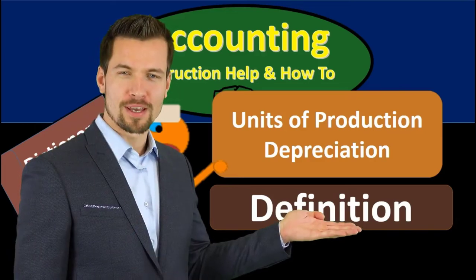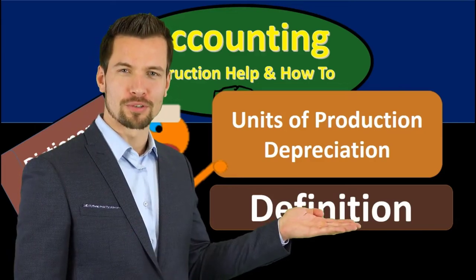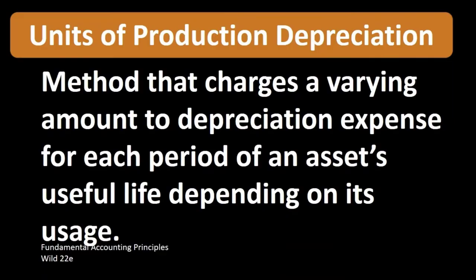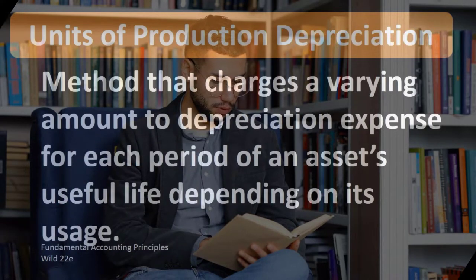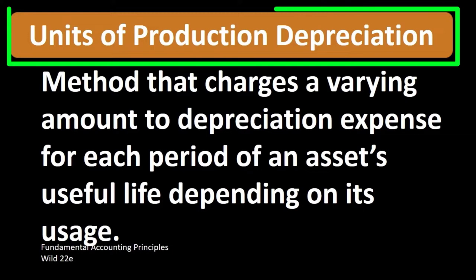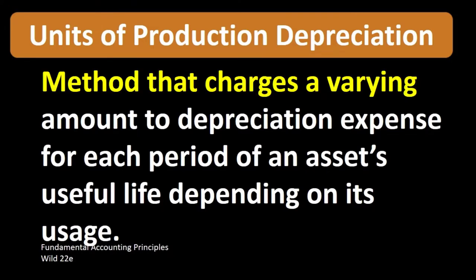In this lecture we will define units of production depreciation. According to Fundamental Accounting Principles Wild 22nd edition, the definition of units of production depreciation is a method that charges a varying amount to depreciation expense for each period of an asset's useful life depending on its usage.